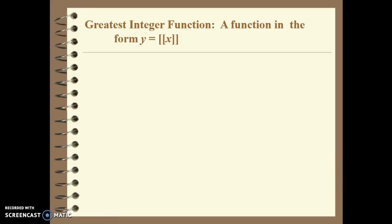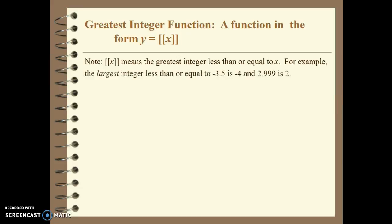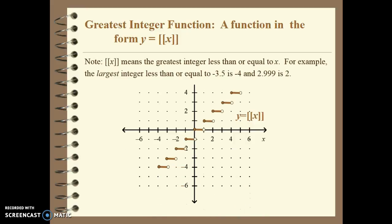The greatest integer function is a very special function. It means we take the greatest integer less than or equal to the value of x. For example, the largest integer less than or equal to negative 3.5 is negative 4, and the largest integer less than or equal to 2.99 is 2. So you're always rounding down. On the graph, any value between 2 and 3 rounds down to 2 on the y-axis, giving us a horizontal line segment at 2.